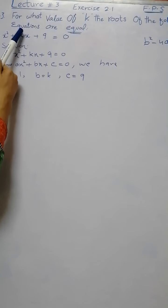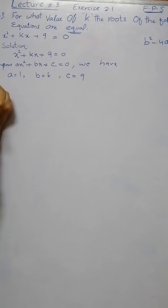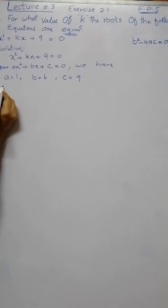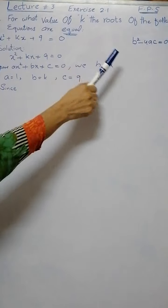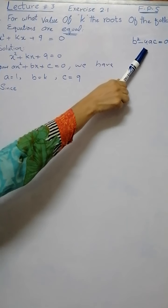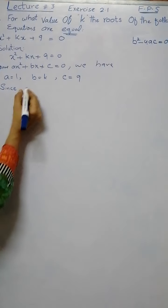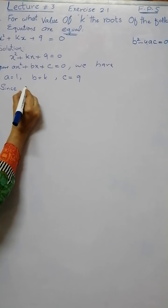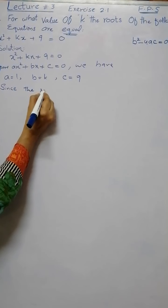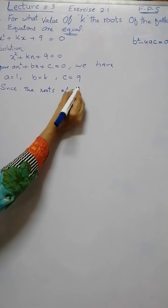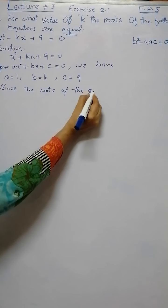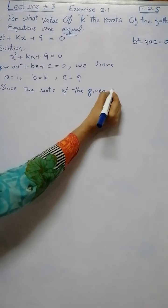As in the question we are given the roots are equal, so since we are given the roots are equal, that means b² - 4ac equals zero. Since the roots of the given equation are equal...